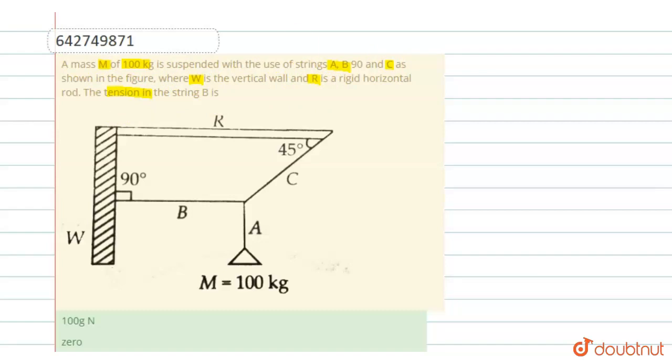find the tension in the string. So let tension in string B be T1, and the tension in string C be T2, and tension in A is capital T. Tension in A is capital T, in C is T2, and